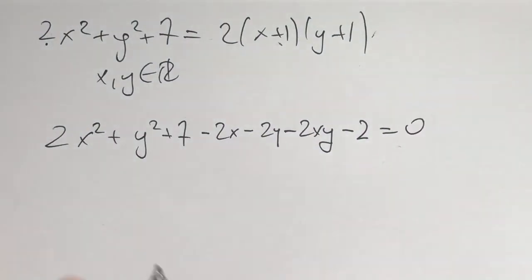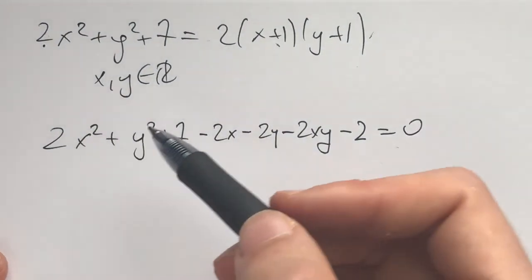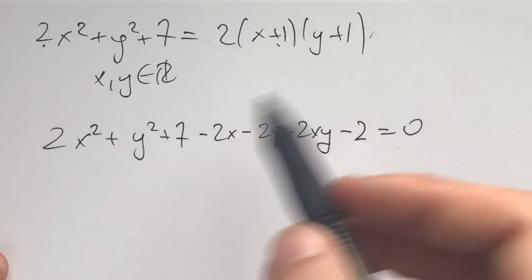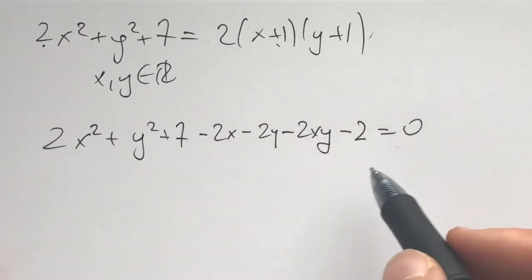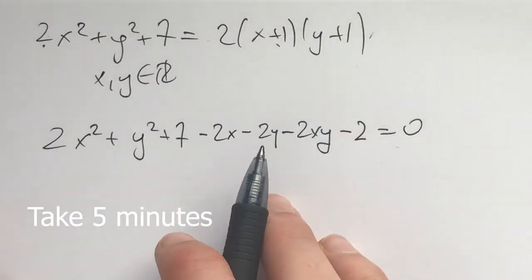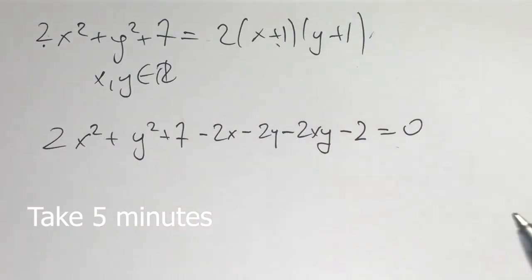What I get is 2x squared plus y squared plus 7 minus 2x minus 2y minus 2xy minus 2 equals 0. Now here I invite you to take another five minutes and see what would you do with this thing.